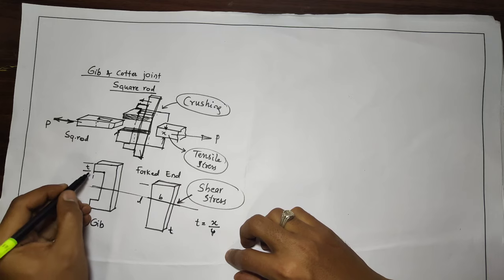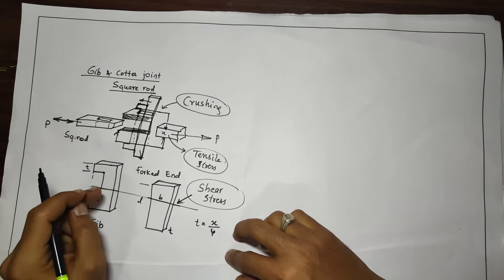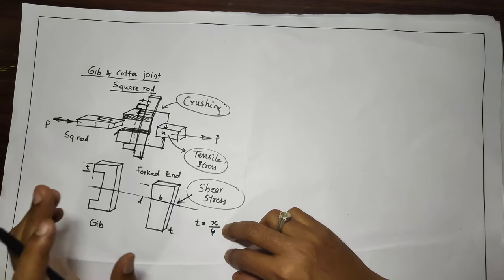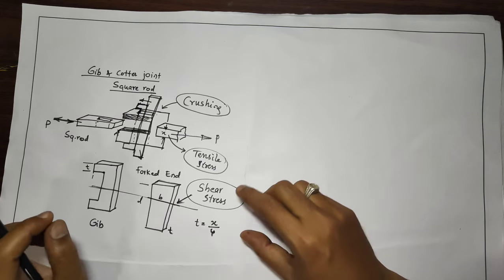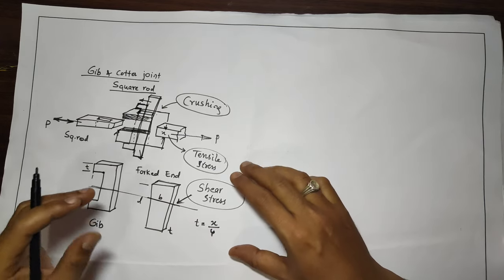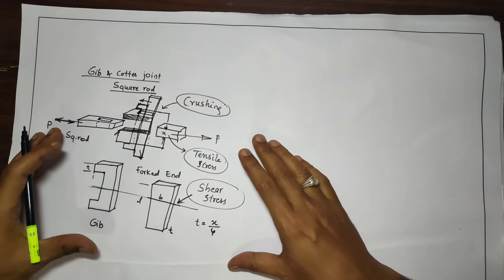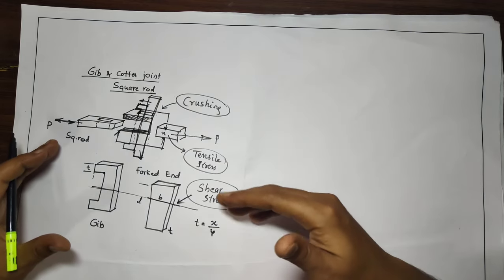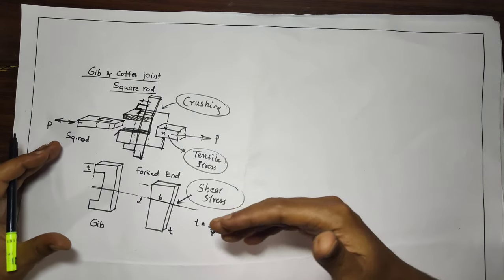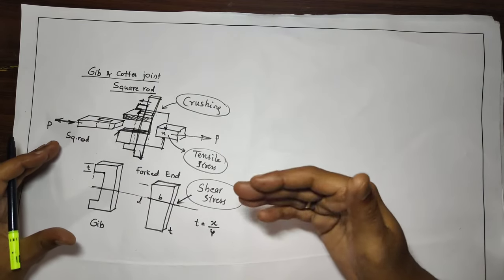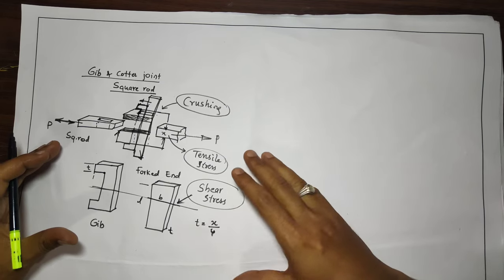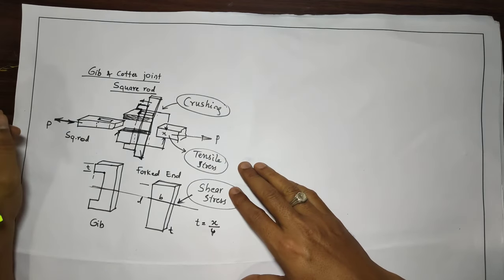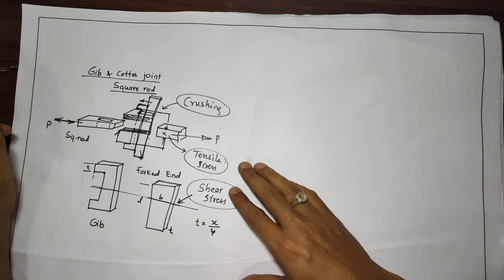The thickness of the gib, which you can call t1 or t2, is equal to the thickness of the cotter. You have to understand this assembly part first so that we can go for the design procedure. In the next class I am going to explain the design procedure for the Gib and Cotter joint, and after that we will have one numerical example as well. Thank you.